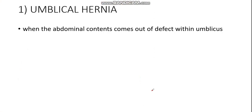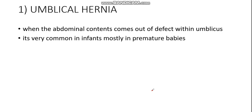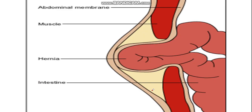Starting with umbilical hernia — when the abdominal contents come out of the defect within the umbilicus, this is called umbilical hernia. Remember, umbilical hernia is very common in infants and mostly in premature babies. It rarely gets strangulated, so doctors delay the surgical operation because it spontaneously resolves within two years of life. Here you can see the umbilicus and the defect from where the gut is coming out.